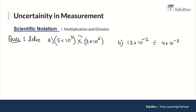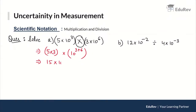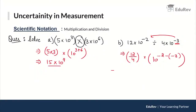Let me solve the practice questions. For multiplication: multiply coefficients 5 × 3 = 15 and add exponents to get 15 × 10⁹. For division: divide coefficients 12 ÷ 4 = 3, and subtract exponents: 10^(−2−(−3)) = 10¹, so the answer is 3 × 10¹ = 30.